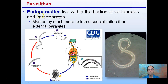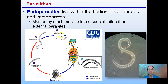Endoparasites live within the bodies of vertebrates and invertebrates — 'endo' meaning inside. They are marked by much more extensive specialization than external parasites. External parasites are kind of like grazers, whereas endoparasites need a very specific match — they might target a specific area of the body or specific organs. So endoparasites refer to parasites on the inside of an organism.